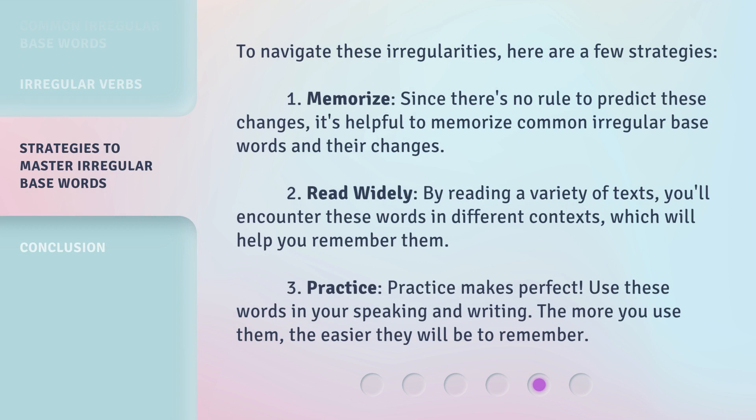To navigate these irregularities, here are a few strategies. First, memorize — since there's no rule to predict these changes, it's helpful to memorize common irregular base words and their changes. Second, read widely — by reading a variety of texts, you'll encounter these words in different contexts, which will help you remember them. Third, practice — practice makes perfect. Fourth, use these words in your speaking and writing. The more you use them, the easier they will be to remember.